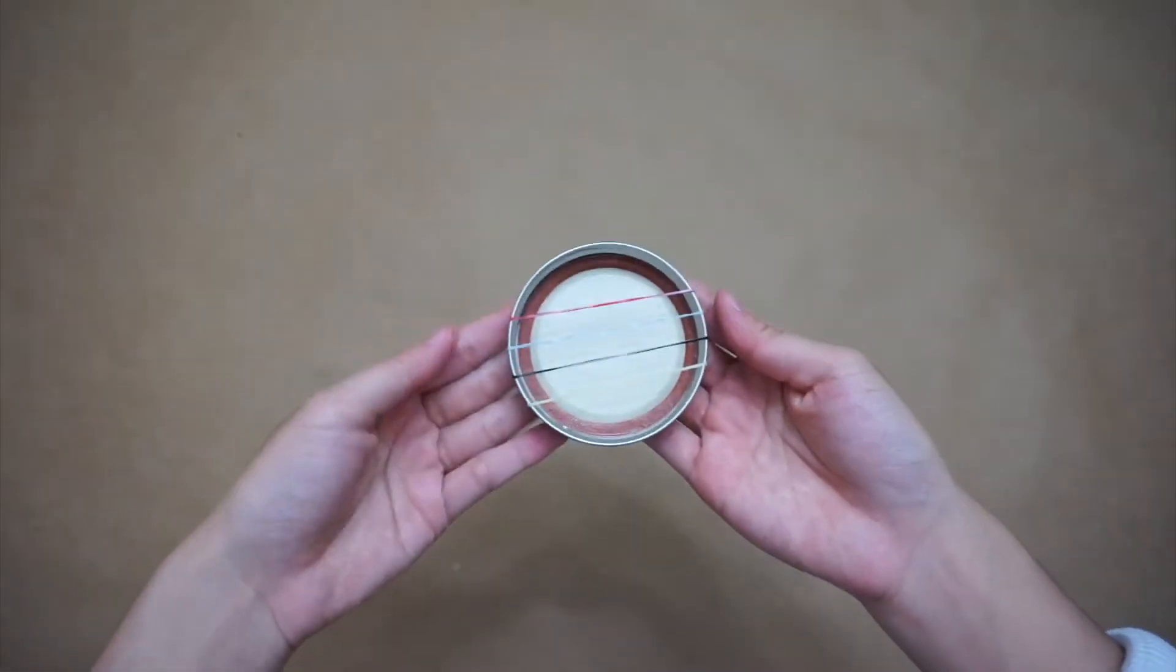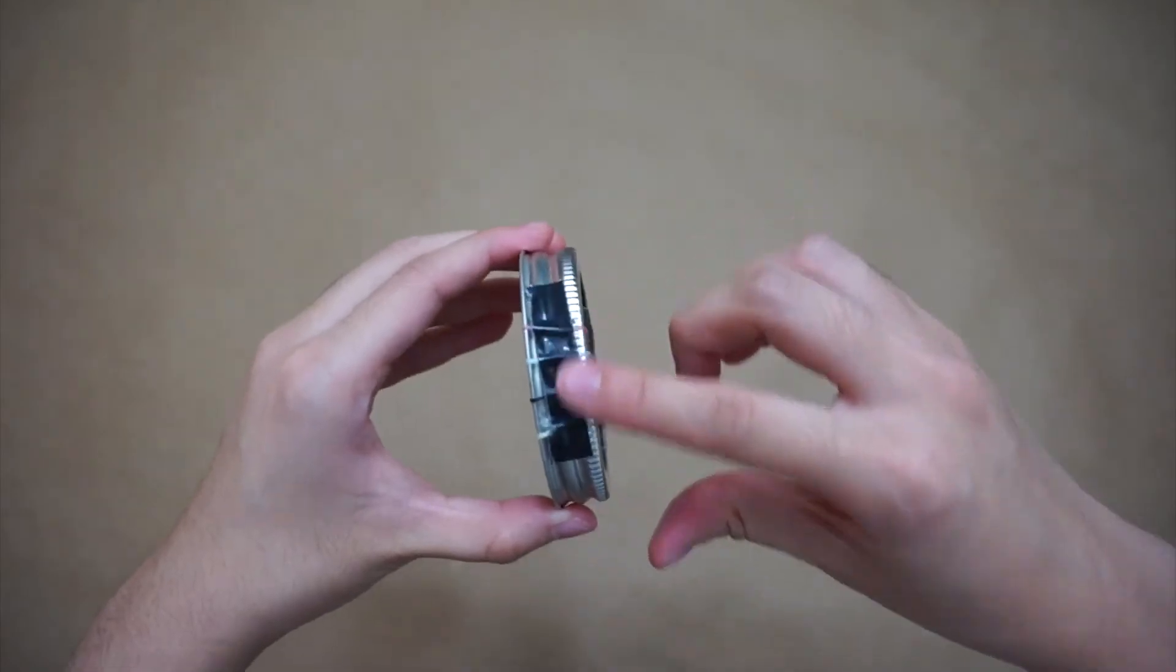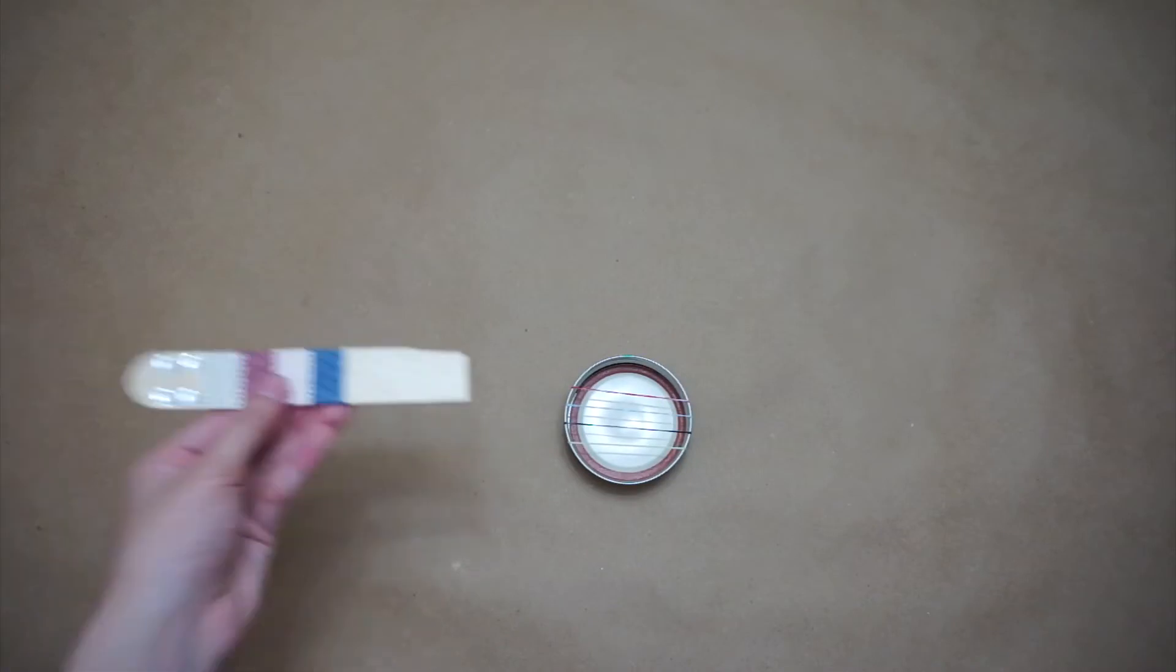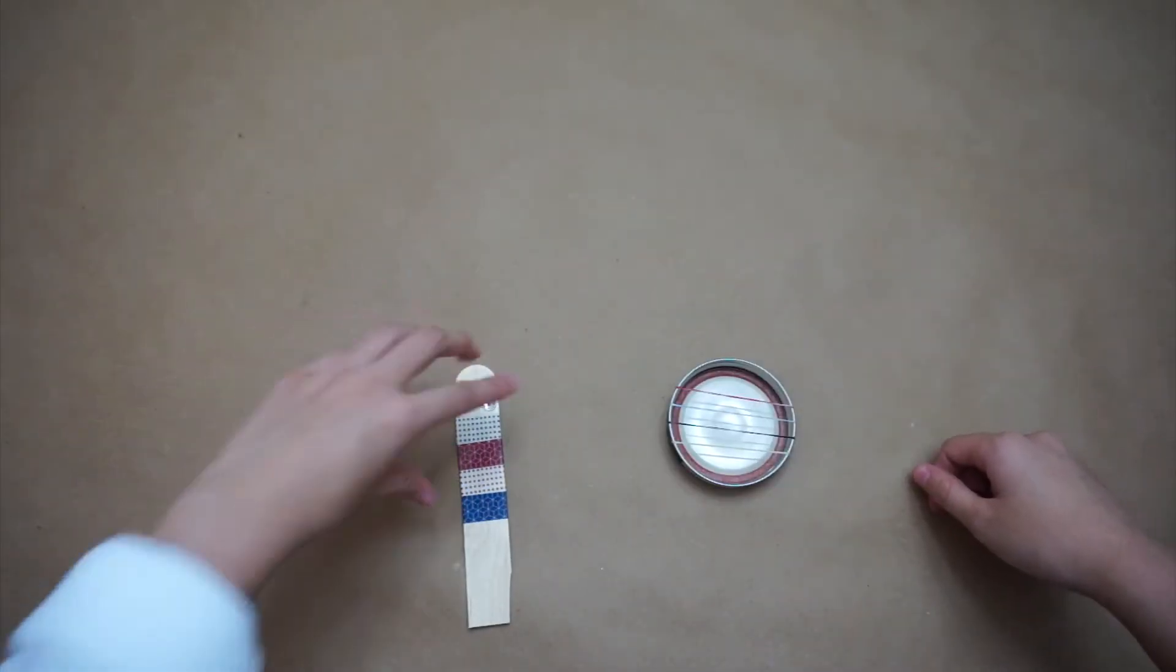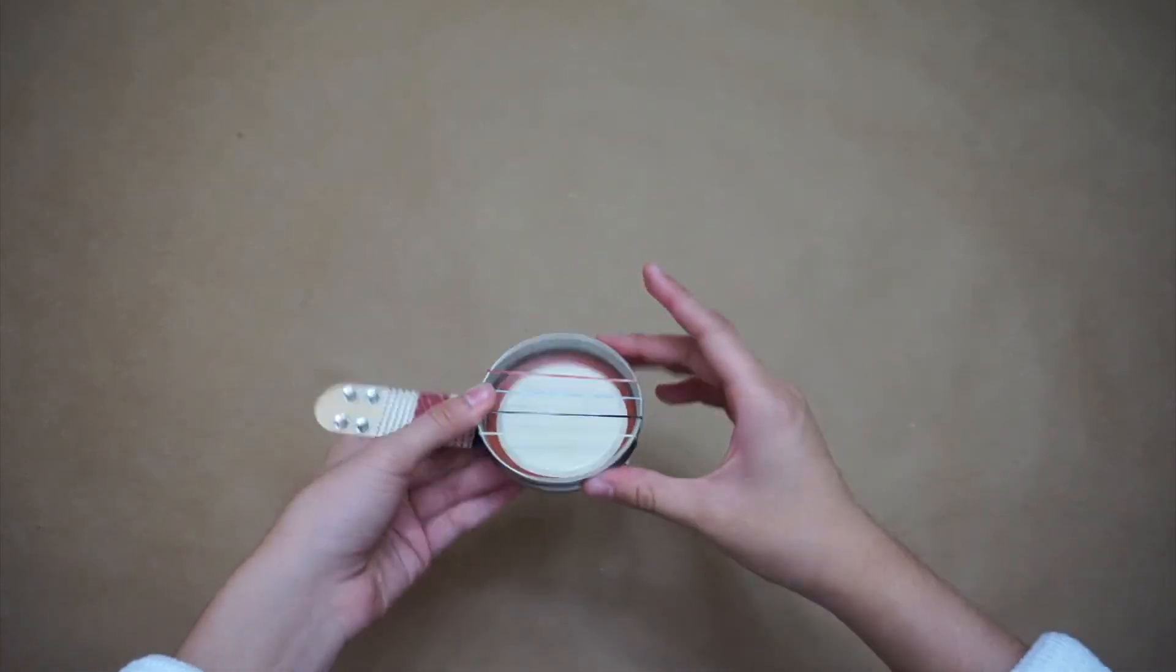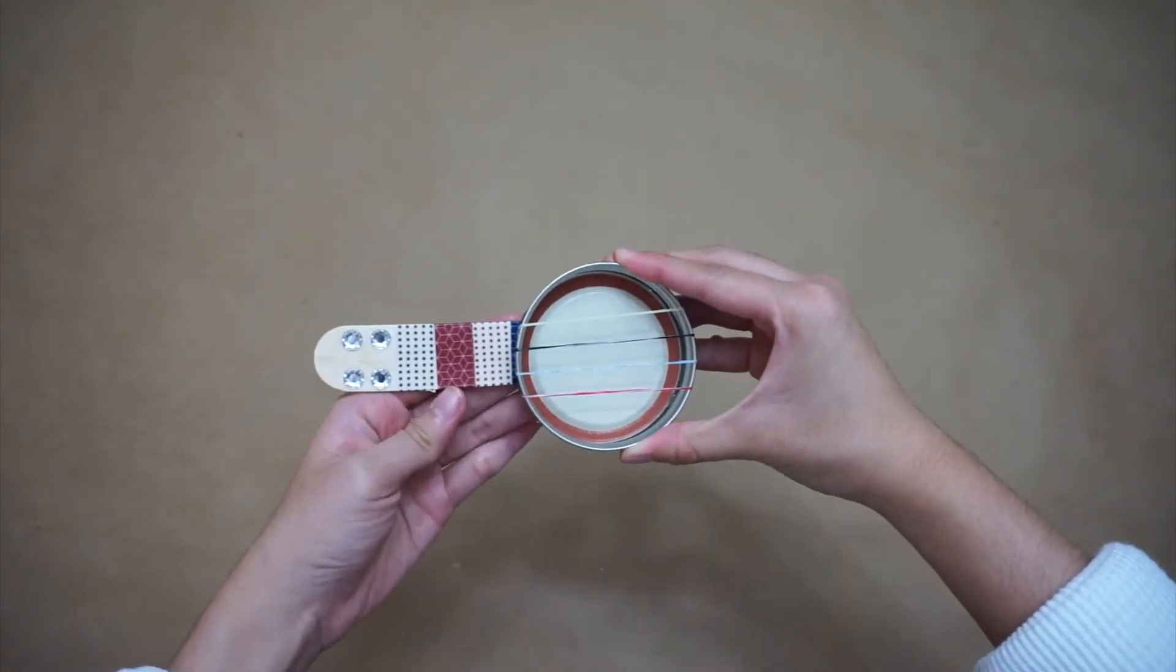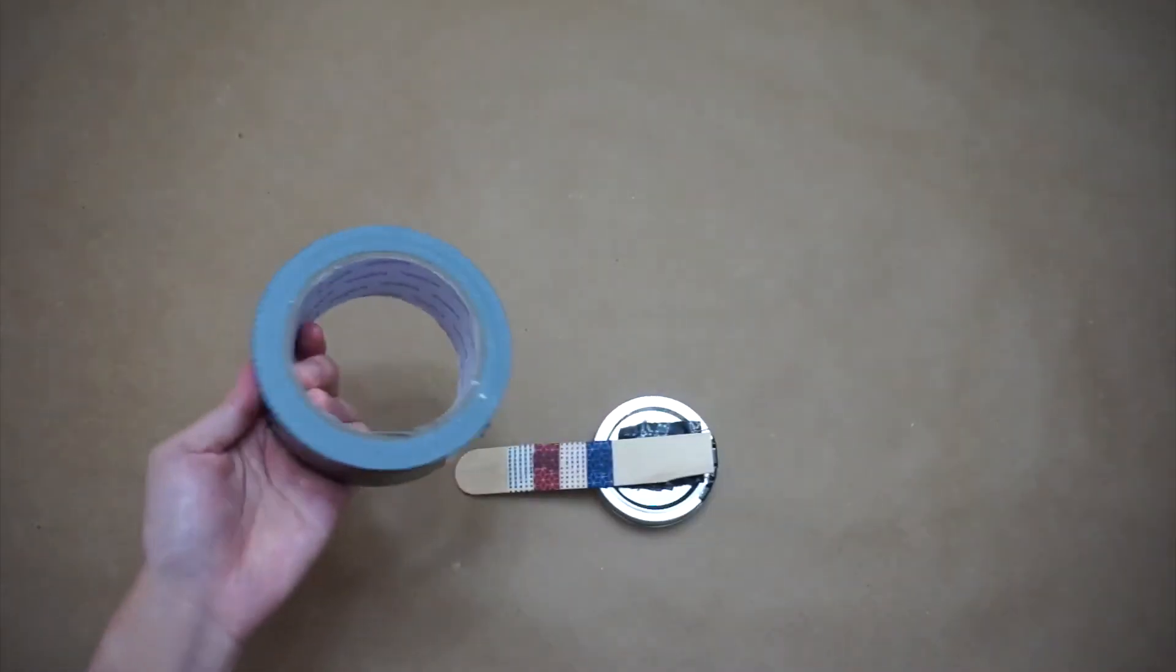To make sure the loom bands were secure, I added two pieces of tape on the sides of the lid, like this. Once you have completed that, we're going to take the popsicle stick and put it on the left side of the lid. We're going to tape the popsicle stick on the back of the lid.